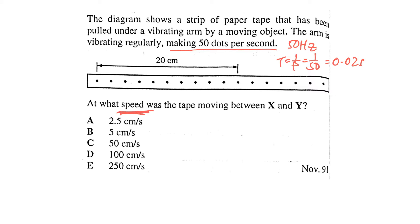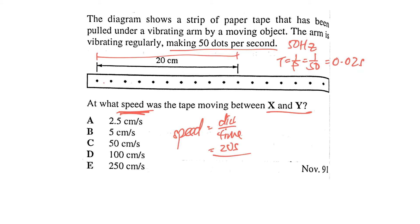In this question you need to find the speed of the tape moving between X and Y. Speed equals distance over time. The distance between X and Y is 20 cm. Each interval takes 0.02 seconds and there are 10 intervals, so the time is 10 times 0.02 seconds. That gives an answer of 100 cm per second, so the answer is D.